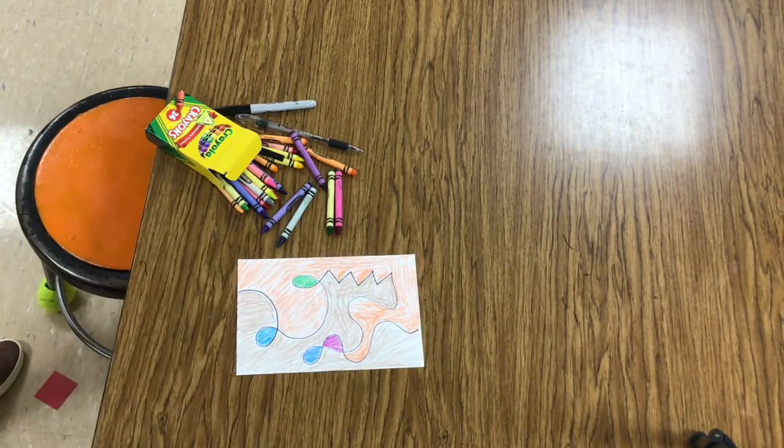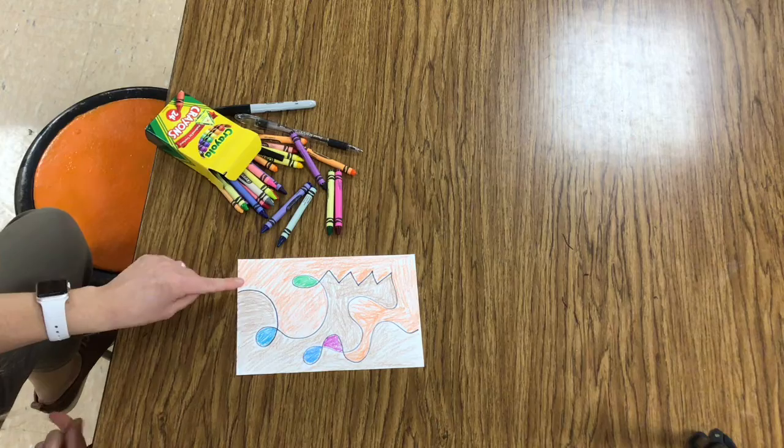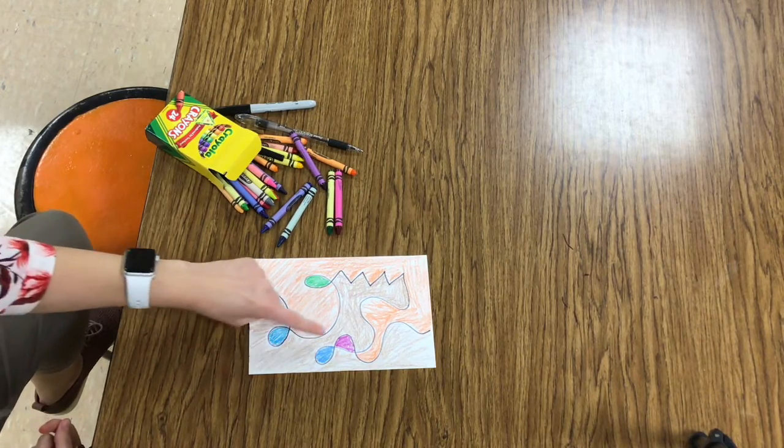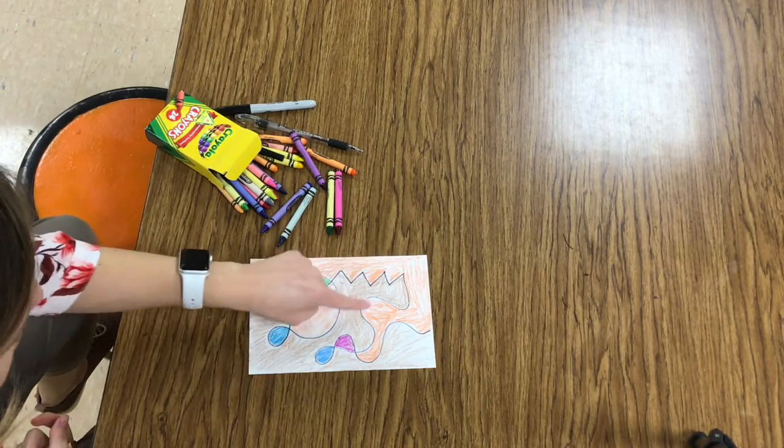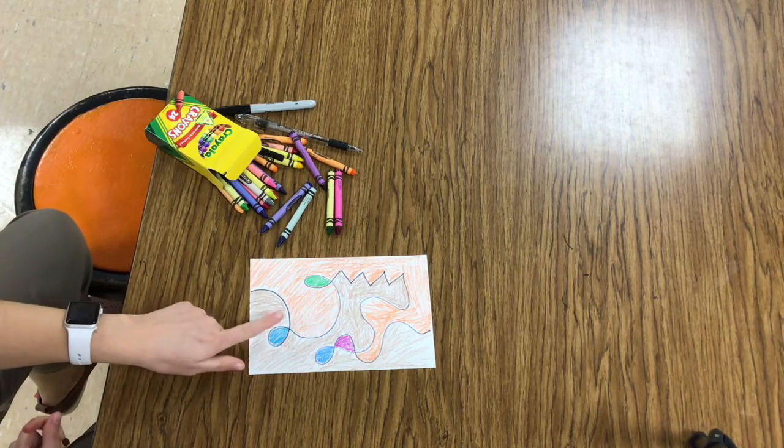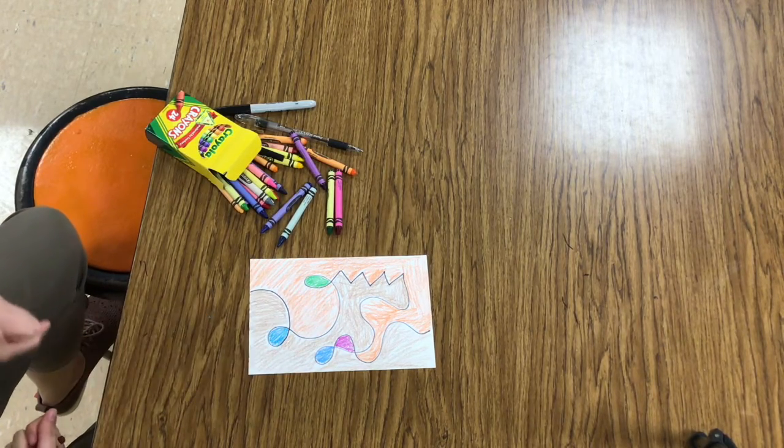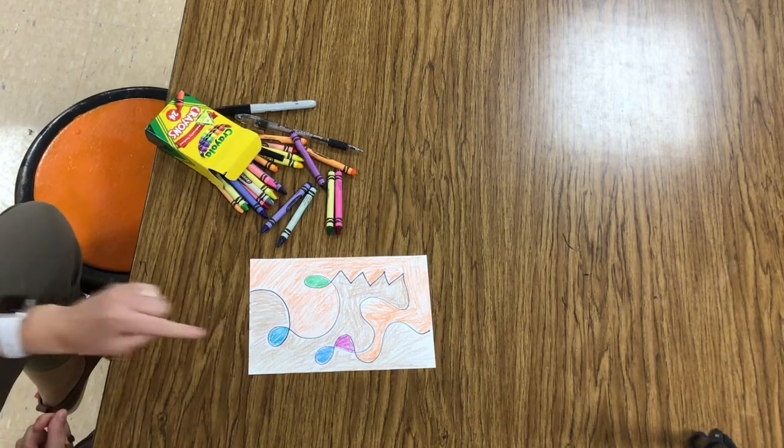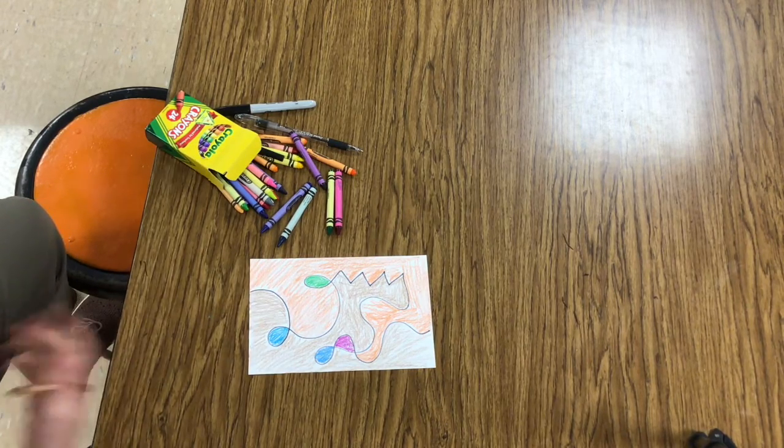My drawing is complete. I have used one line that's continuous. That means it keeps going across my paper without lifting up my Sharpie. I have created shapes where the lines overlap and I have used color to fill in my drawing. I'm finished for today.